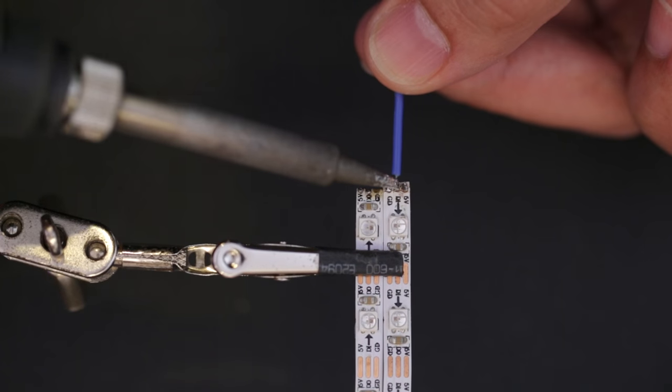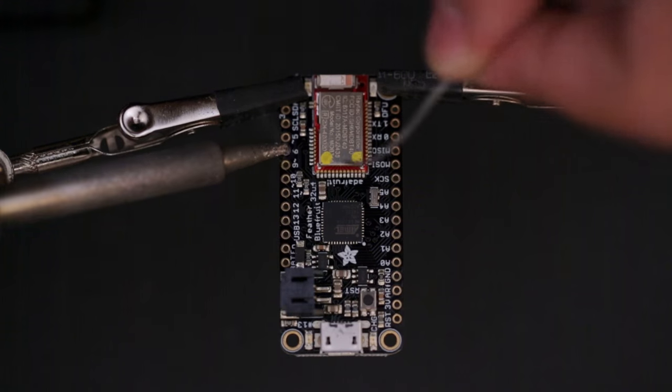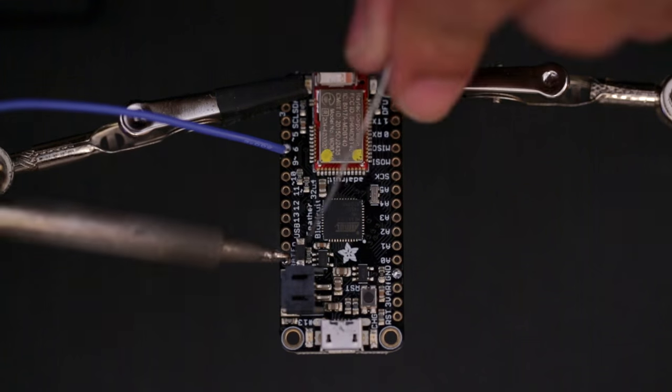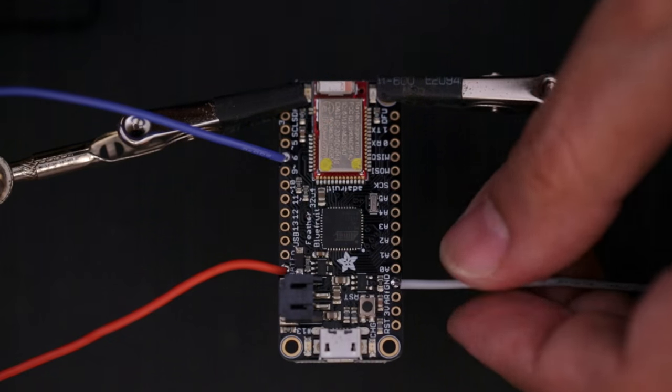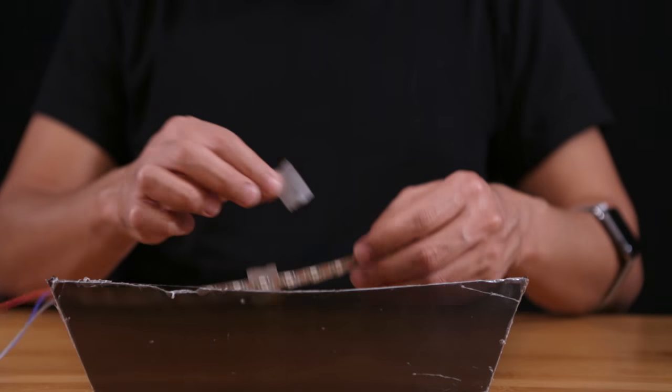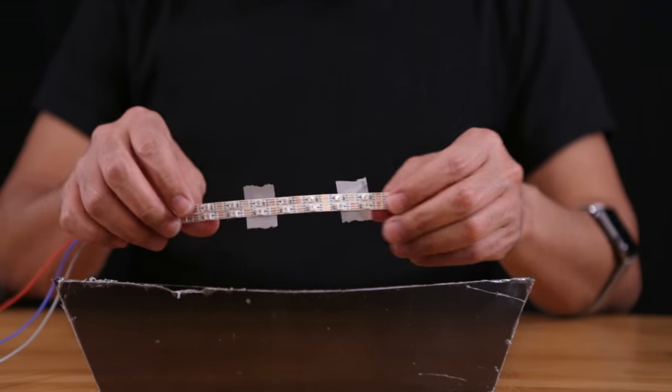Now we can wire up the NeoPixel strips to the Adafruit Feather BLE module. It just needs three wires which will connect to data, power, and ground. Place the strip onto the acrylic visor to mock up the arrangement and mount it in place using simple scotch tape.